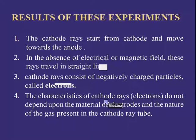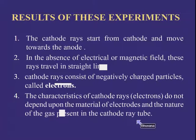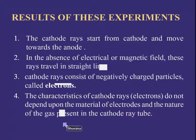The characteristics of cathode rays — that is, electrons — are that they do not depend upon the material of the electrodes or the nature of the gas present in the cathode ray tube. From this experiment, it was concluded that electrons are basic constituents of all atoms.